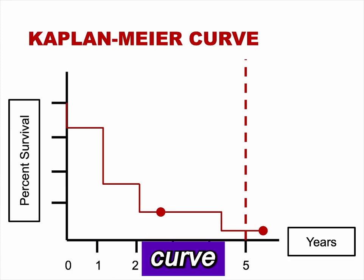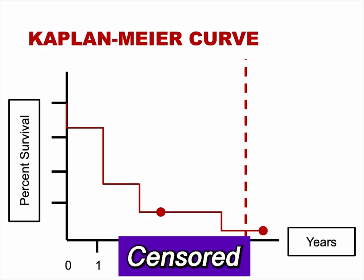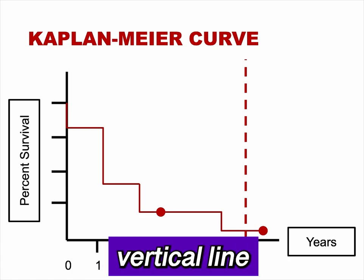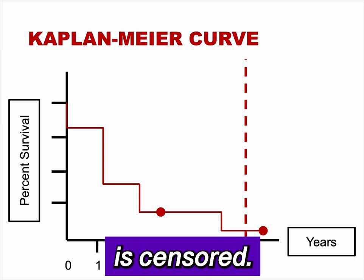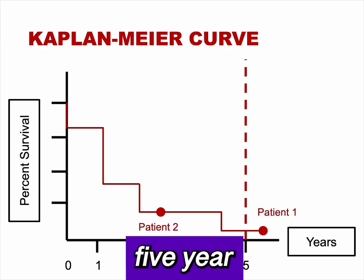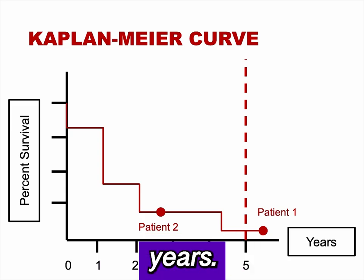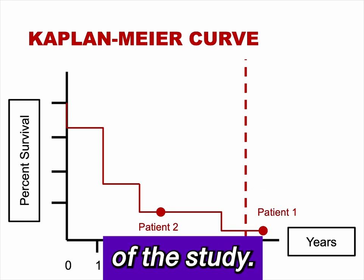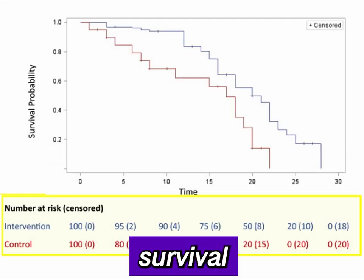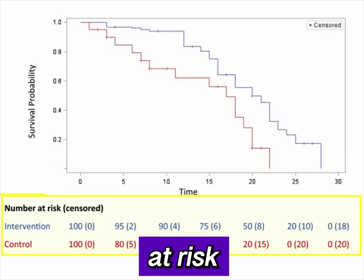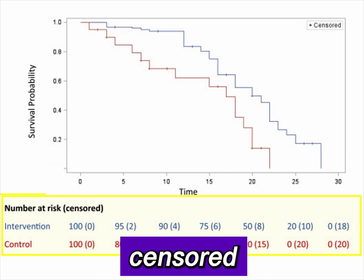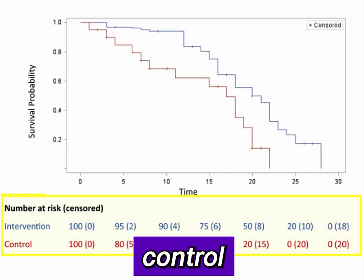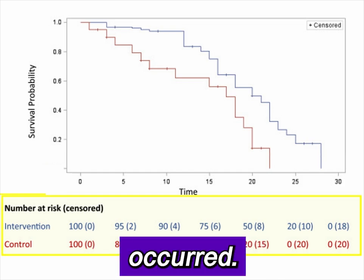This is an example of a Kaplan-Meier curve indicating censored data. Censored data is often indicated by a vertical line or a dot at the time the patient is censored. The circle after the five-year study period represents censored patient one, who survived longer than five years. The circle before three years represents censored patient two, who dropped out of the study. This Kaplan-Meier survival curve also indicates the number at risk and the number censored at each time interval for the control and intervention groups, with small ticks on each curve indicating when censoring occurred.